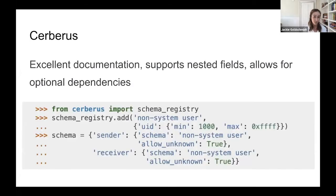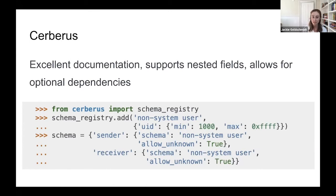The first validation tool we'll discuss is called Cerberus. In Greek mythology, Cerberus is the dog that guards the gates of Hades — in terms of data pipelines with messy real-world data, you can think of Cerberus as the tool guarding your data pipeline, making sure that when you receive data, it's actually valid before moving further into your system. Pros for Cerberus: the documentation is excellent, it has a lot of variety for supporting nested fields and dependencies, and it's like a Swiss Army knife you can use to define exactly what schema you expect from your data.